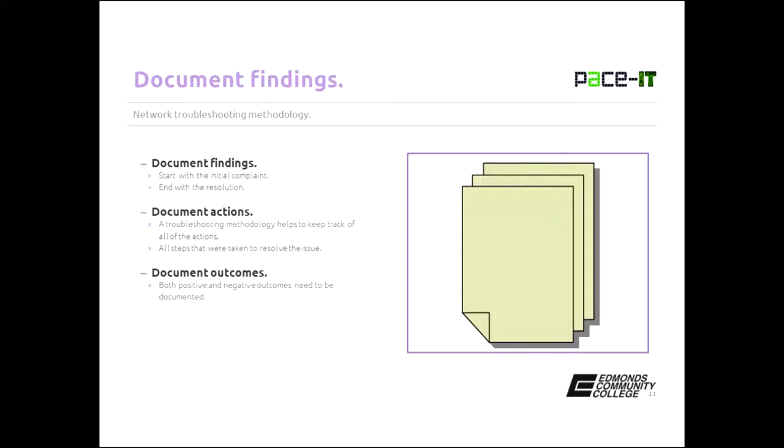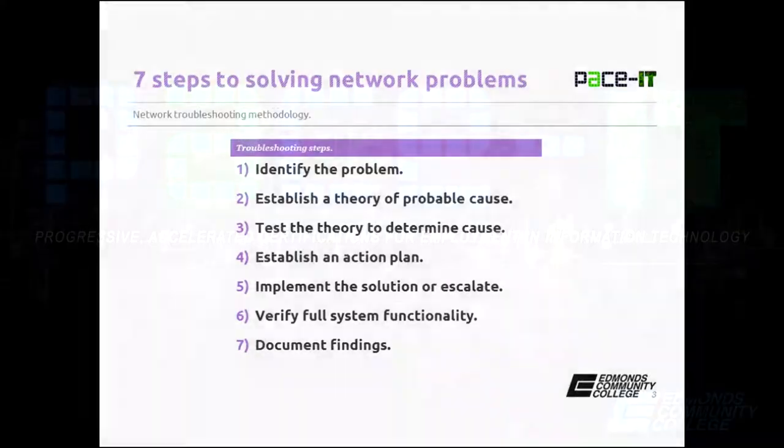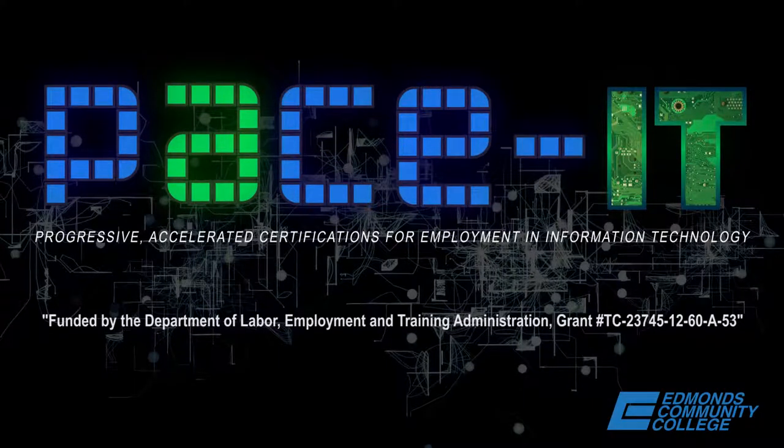So now we've gone through all seven steps of the Network Plus troubleshooting methodology. There's identify the problem, establish a theory of probable cause, test the theory to determine actual cause, establish an action plan, implement the action plan or escalate it to somebody who can, verify full system functionality, and then completely document your findings. That concludes this webinar on CompTIA's Network Plus exam N10-005 exam objective 1.8.